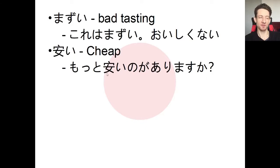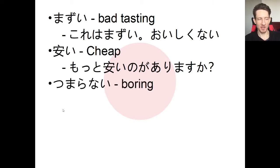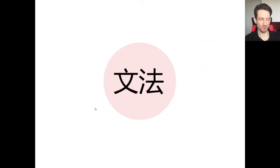We can say: motto yasui no ga arimasu ka? — Is there a cheaper one available? Maybe you're at a store buying jeans or a car and you want to ask if there's a cheaper option. The opposite of yasui is takai — expensive. We also saw tsumaranai — boring or uninteresting. For example, this movie is lame. The opposite of tsumaranai is omoshiroi; omoshiroku nai means tsumaranai — boring, lame.